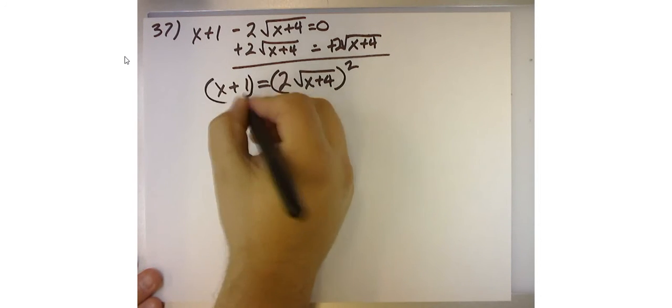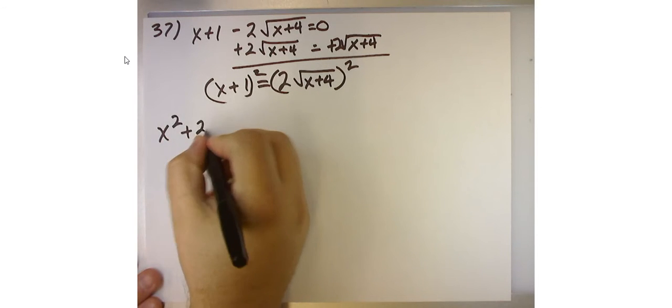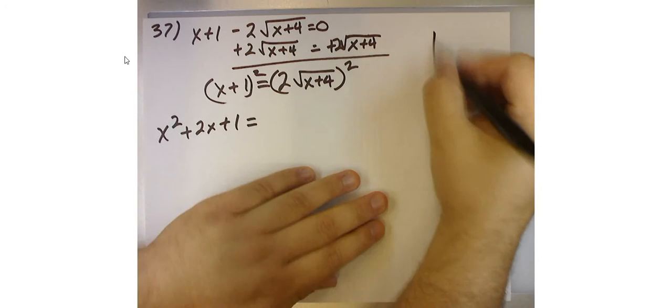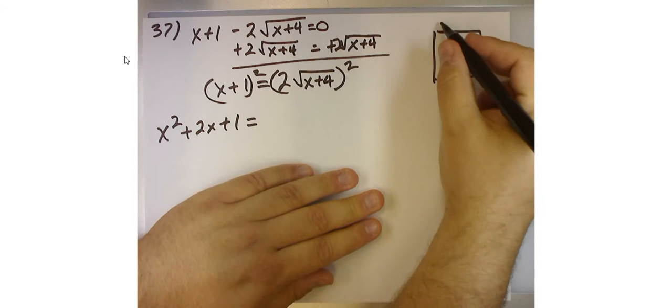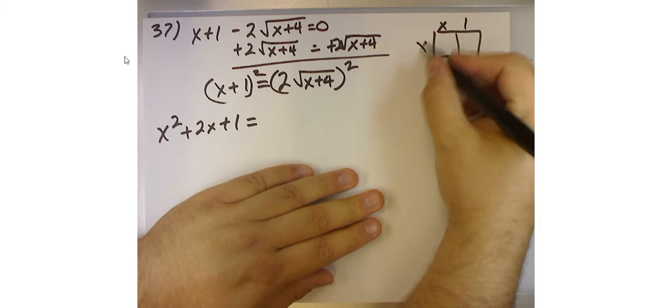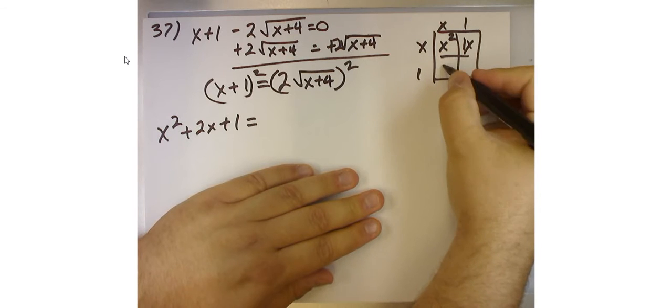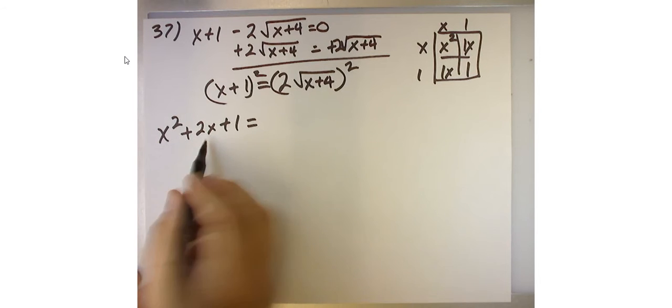And whatever I do on one side, I've got to do on the other side. So this becomes x²+2x+1. How do I know that? Well, I've memorized the special pattern for squaring a binomial. But if I say (x+1)(x+1), I get x²+1x+1x+1. And that's where this x²+2x+1 comes from.